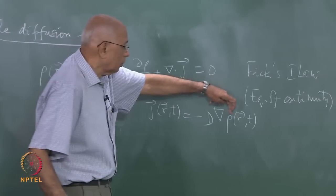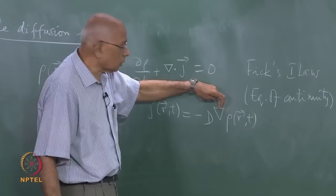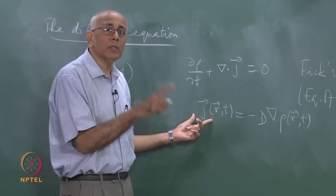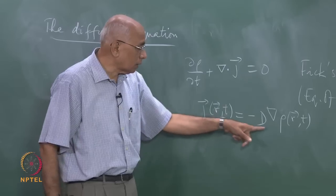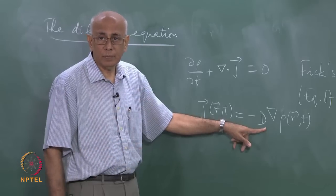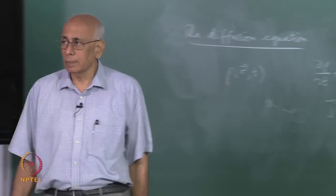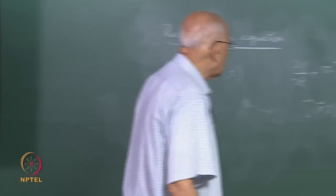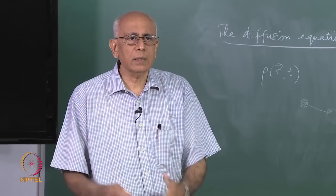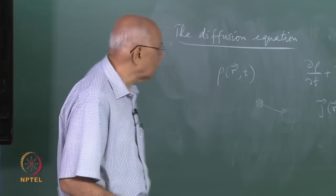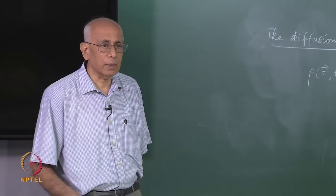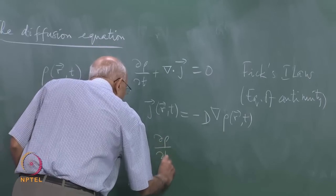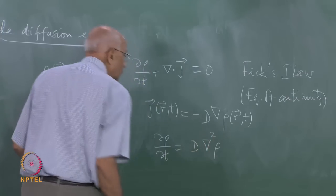Of course your dimensions are completely wrong here — these two have different dimensions. So you fix that by multiplying by a constant called the diffusion constant D. The dimensions of j are amount of material crossing per unit area per unit time, while rho is per unit volume — there is already a factor of one over length in the gradient. So D has dimensions of length squared over time. If you put this back, it immediately gives you delta rho over delta t equal to D times del-squared of rho — and that is the diffusion equation.